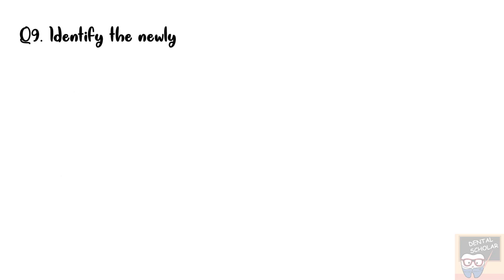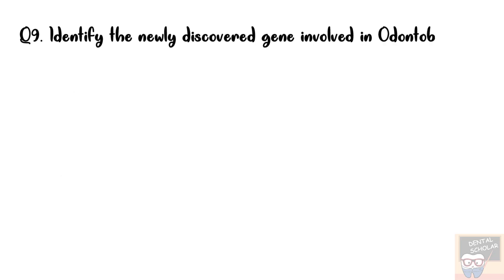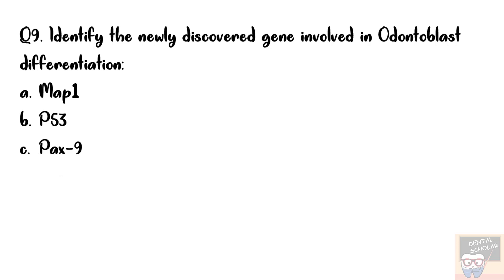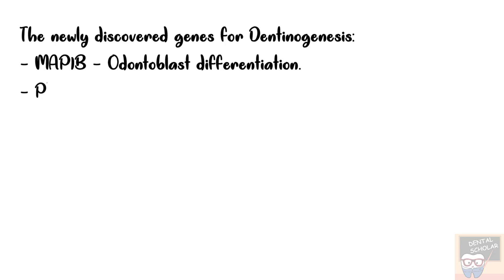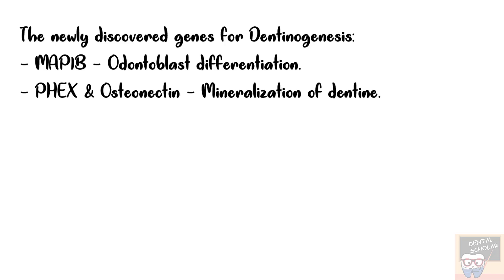Question number 9: Identify the newly discovered gene involved in odontoblast differentiation. Options are MAP1, P53, PAX9, and PHEX. The answer is option A, MAP1. The newly discovered genes for dentinogenesis include MAP1B, which is involved in odontoblastic differentiation, and PHEX and osteonectin, which are involved in mineralization of dentine.